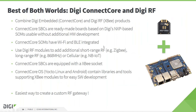If you plan to develop a custom RF gateway or more sophisticated concentrator device, we recommend combining a Digi ConnectCore product with a Digi XBee module. Digi offers embedded system-on-modules based on NXP's i.MX application processors and single board computers populated with these SOMs. Those SBCs are ready-made boards which can be used without additional hardware development. The Digi SOMs have Wi-Fi and Bluetooth already integrated; by adding an XBee module you can extend the wireless capabilities with 2.4 GHz ZigBee, sub-gigahertz, or cellular. The ConnectCore SBCs are equipped with an XBee socket, and the operating systems — Yocto Linux and Android — contain libraries and tools supporting XBee modules for easy software development. This is the easiest way to create a custom RF gateway.